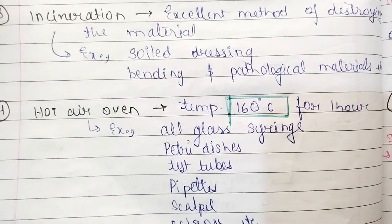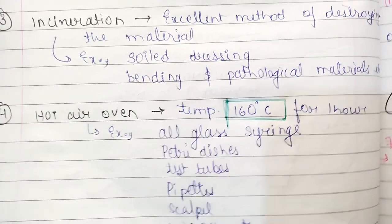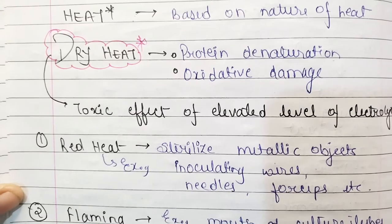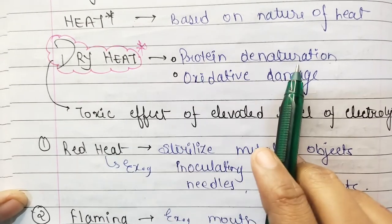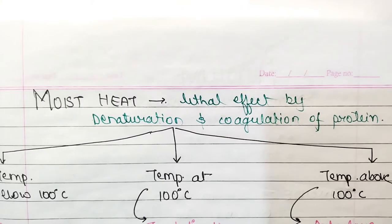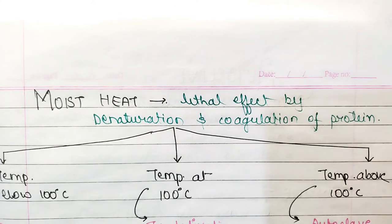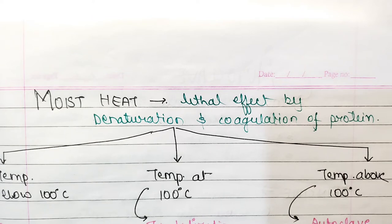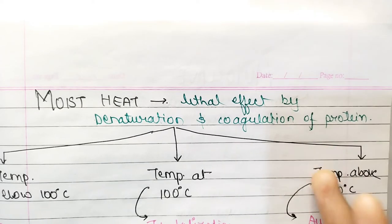Coming to moist heat: moist heat has a lethal effect by denaturation and coagulation of the protein. The key difference is that dry heat causes protein denaturation, whereas moist heat causes both denaturation and coagulation of the protein. Moist heat can be divided into three parts based on temperature.